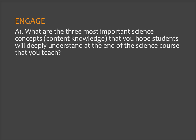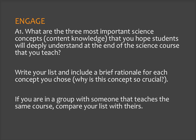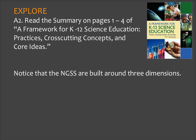To start, think about the three most important science concepts, or content knowledge, that you hope students will deeply understand at the end of the science course that you teach. Write your list and include a brief rationale for each concept you chose. Why do you think this concept is so crucial? If you're in a group with someone that teaches the same course, compare your list with theirs. Pause the video as you complete these activities.